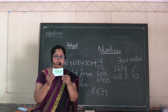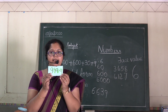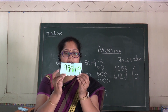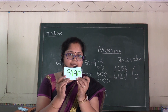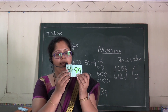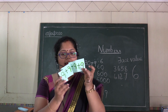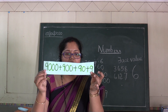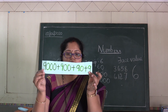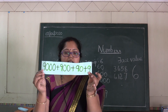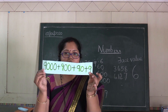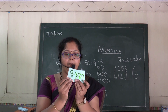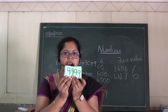Now, which number is this? Are you able to see? If I expand it: nine thousand plus nine hundred plus ninety plus nine — this is the expanded form of the number using a plus sign. And the short form will be nine thousand nine hundred ninety-nine — 9,999.